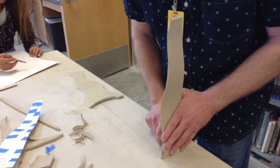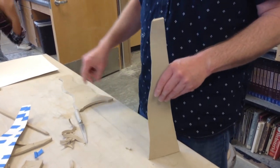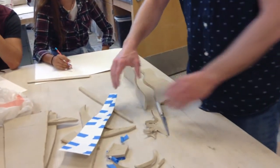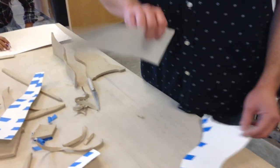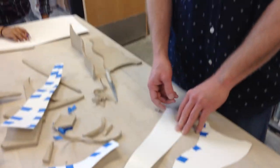So the rest of this process is scoring and slipping. Obviously I'm going to cut out the back and the other side as well, and score and slip all those together. That's how you do it. Thank you.